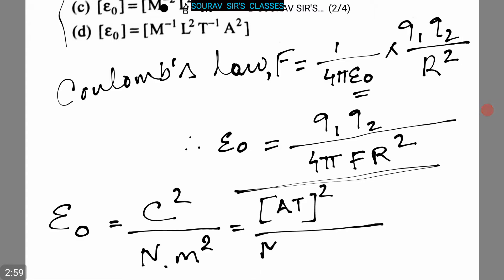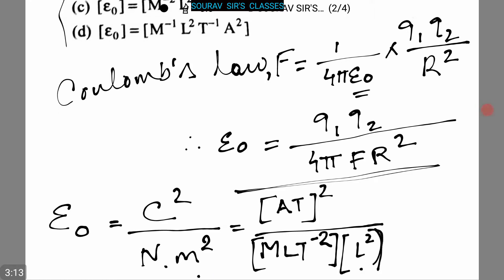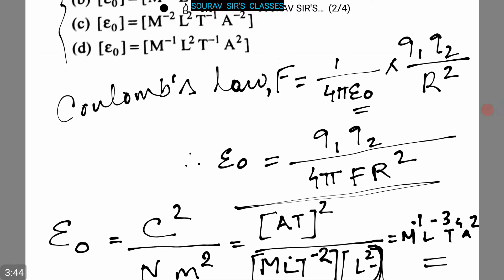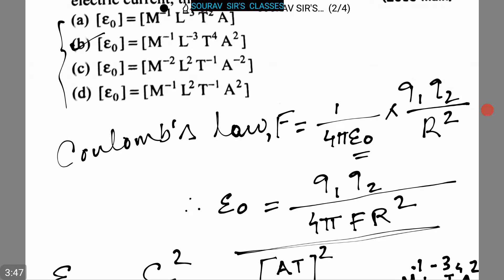... M·L·T⁻² × L². Simplifying this, we get E0 = M⁻¹ L⁻³ T⁴ A². This is our answer, so option B is the correct answer.